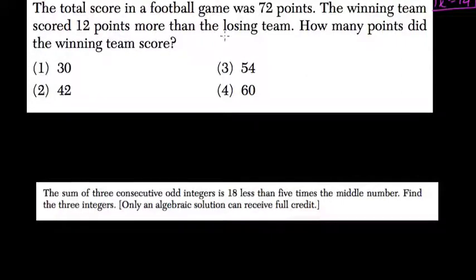The total score in a football game was 72 points. The winning team scored 12 points more than the losing team. How many points did the winning team score?